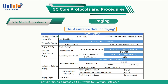The assistance data for paging can also be used to provide the base station with information regarding the retransmission of NGAP paging messages. The AMF can specify the current paging attempts count and the total number of attempts planned. The AMF can also specify whether or not it plans to change the scope of the geographic paging area on the next paging attempt.